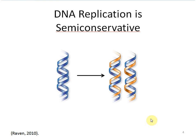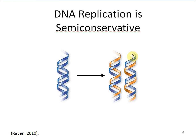Another important feature of DNA replication is that it's semi-conservative. We start with a parent strand, and we wind up with two strands — both containing one parent strand and one new daughter strand.